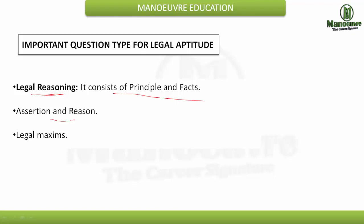Now, Assertion and Reason. In this type of question, two individual statements are given and you have to state whether these statements are true or false, and if both are true, whether the reason is the correct answer for the assertion. You can crack this simply by adding the word 'because' between the two statements and re-reading it — this is one of the most helpful tricks for assertion and reason.